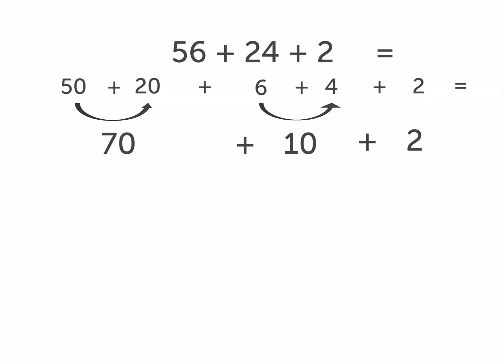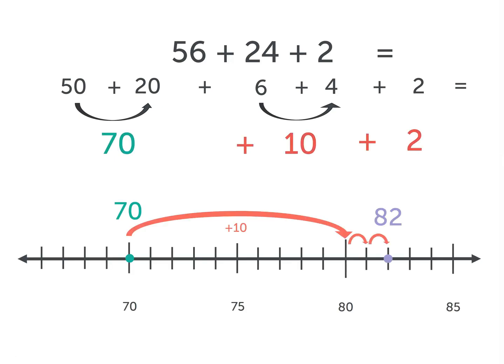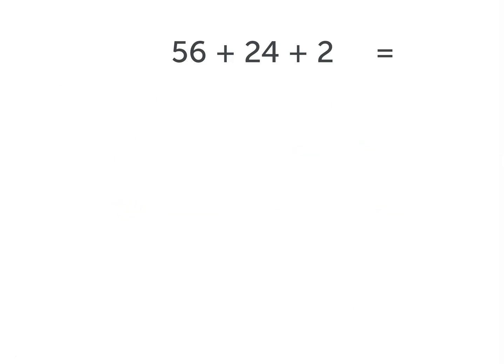We used a number line to help us see the sum of 70 plus 10 plus 2, which was 82. So 56 plus 24 plus 2 is also 82.